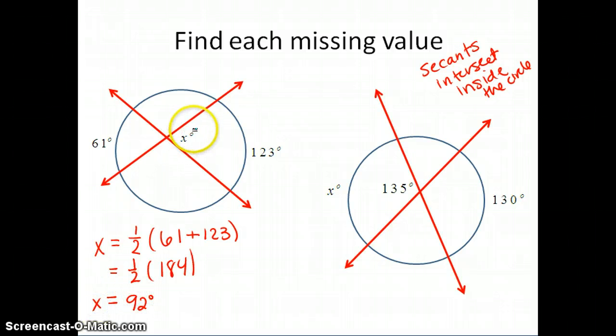So we have one-half of 184, and half of 184 is 92 degrees. So the measure of x, again on the inside of the circle, is half of the two arcs that it intercepts. We're going to use that same principle as we do the second example.